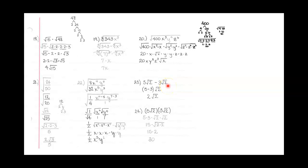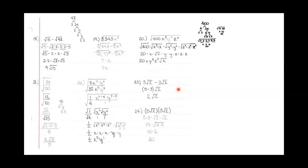Continuing on with the solutions for our sample test, let's look at number 23. We've got 5 square roots of 2 minus 3 square roots of 2. Remember that you cannot add or subtract radicals unless the radicand and the index are exactly the same — the number underneath the radical, the 2, and the index, the fact that these are both square roots, not cube roots or something else.